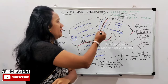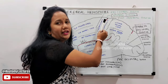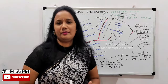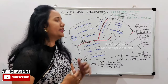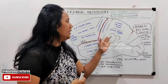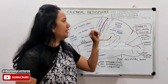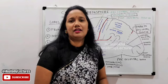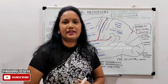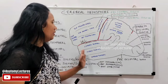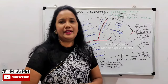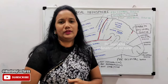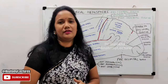The pre-central gyrus in the frontal lobe is mostly related to motor activity — all motor fibers arise from here. The frontal lobe is also related to emotional behavior, judgment, and the frontal eye field. The post-central gyrus in the parietal lobe is the sensory cortex, related to all sensations, while the remaining parietal lobe handles arithmetic, calculations, and spelling. The temporal lobe is mainly related to the auditory area and speech, and the occipital lobe is mainly concerned with vision — the visual cortex is located there.